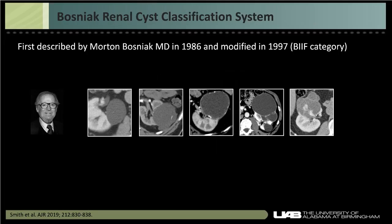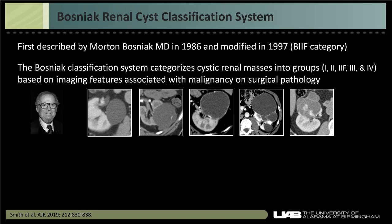The Bosniak renal cyst classification system was first described by Morton Bosniak in 1986, modified in 1997, and there is now a new version for 2019. We're going to cover the current version, which is in state-of-the-art practice — the new version is more of a research tool that may eventually transition to clinical use. To apply the Bosniak system, you need to use a multiphasic renal CT. The classification categorizes cystic renal masses into groups 1 through 4, with a 2F group for follow-up, based on imaging features associated with malignancy on surgical pathology.